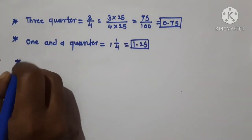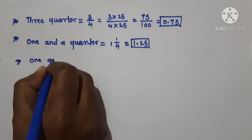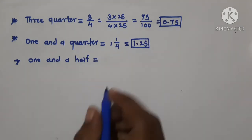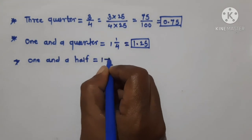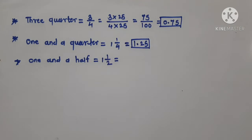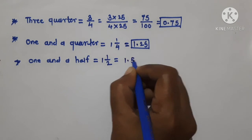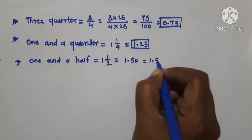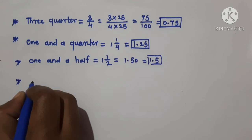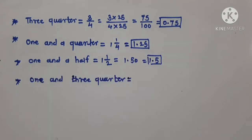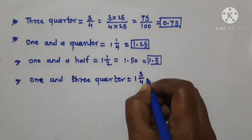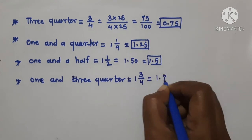Next is 1 and a half. Let us convert this into decimal form: 1 and a half is equal to 1.50. Now let us see about 1 and three quarters. 1 and three quarters is equal to 1.75.